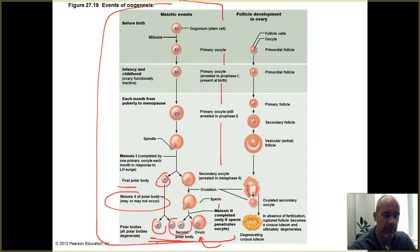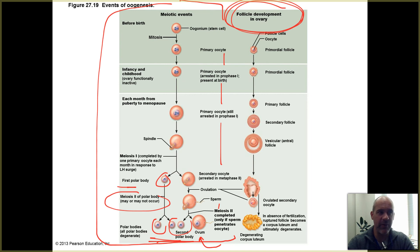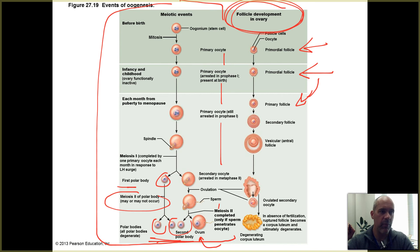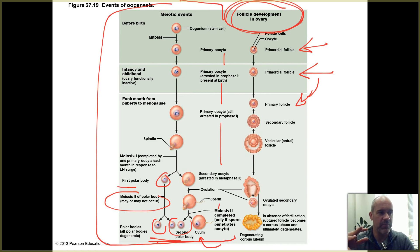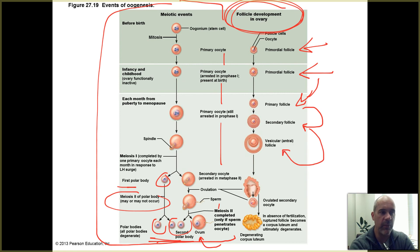Follicle development in the ovaries is also shown in the figure. The follicle names do not always correspond to the name of the oocyte inside, so it's important not to confuse them. Follicles start as primordial follicles before birth, then are present during infancy and childhood. They head down the pathway of becoming primary follicles — still one layer of cells around the oocyte, but those cells become cuboidal instead of squamous. During a monthly cycle, some continue to mature into secondary follicles.